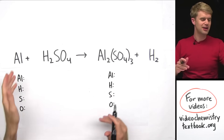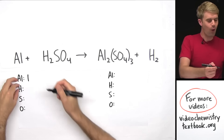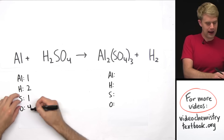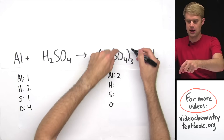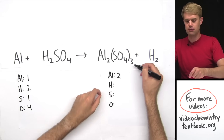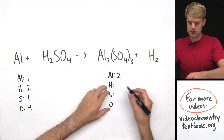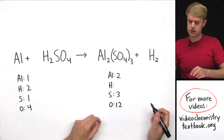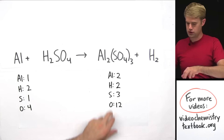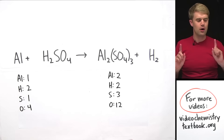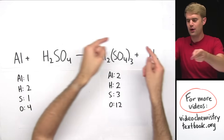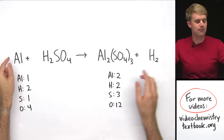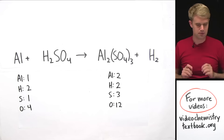We've got more parentheses here. On the left: one aluminum, two hydrogens, one sulfur, and four oxygens. On the right: two aluminums, and everything inside the parentheses is multiplied by three — so three sulfurs and four times three giving 12 oxygens — plus two hydrogens. Aluminum and hydrogen are on their own so I'll save them for last and focus on sulfur and oxygen first.